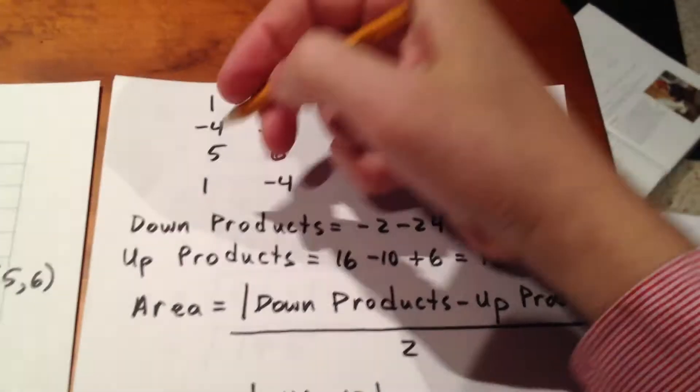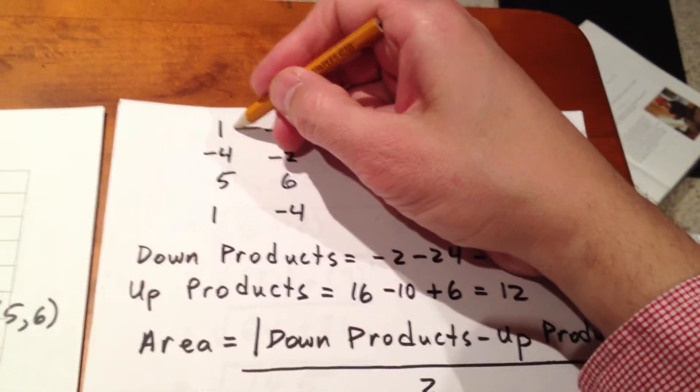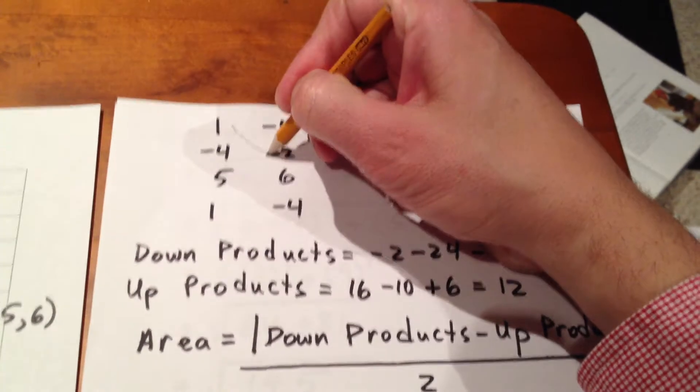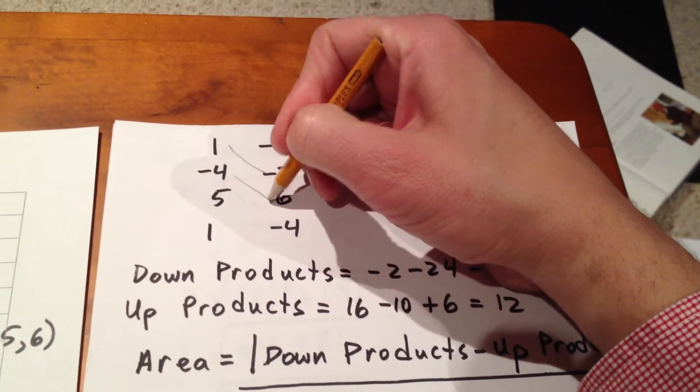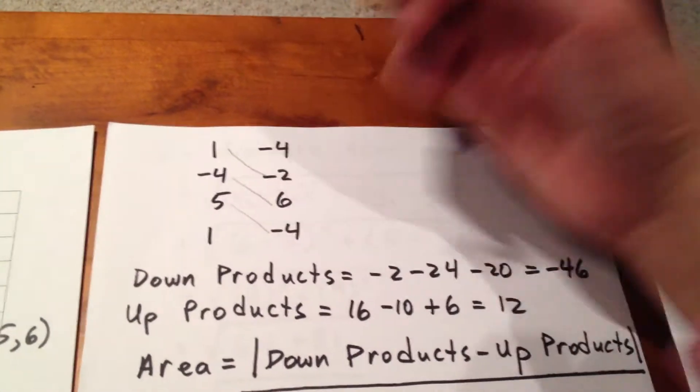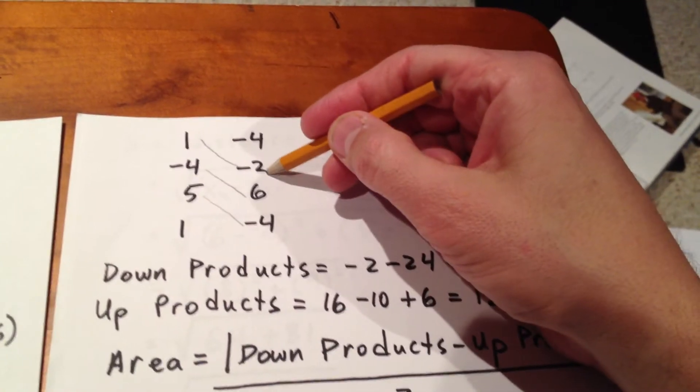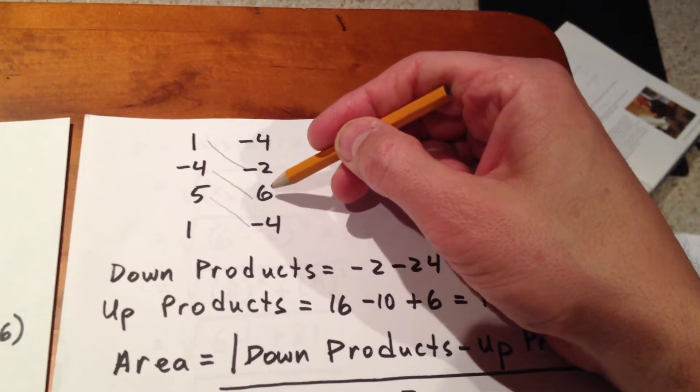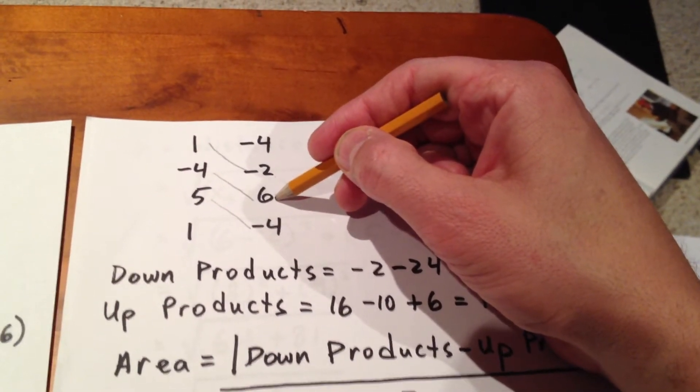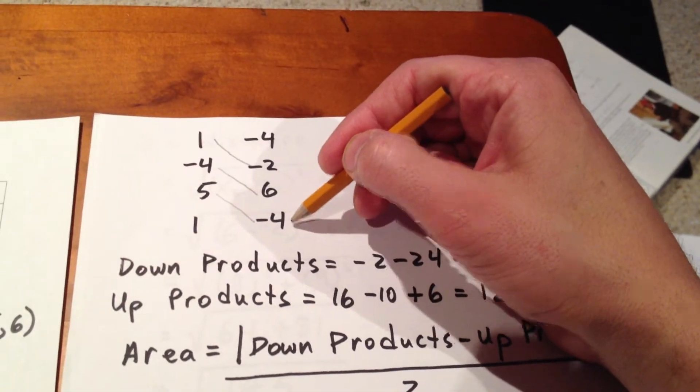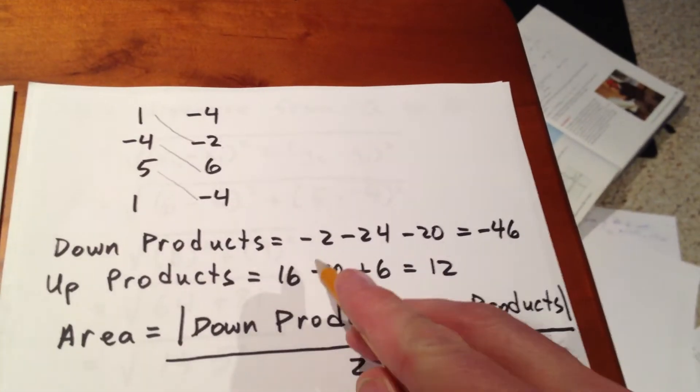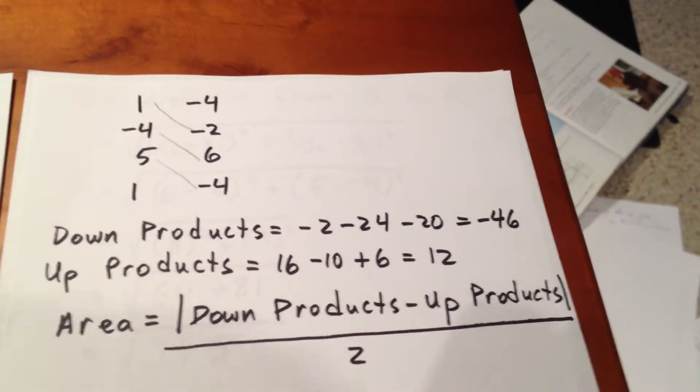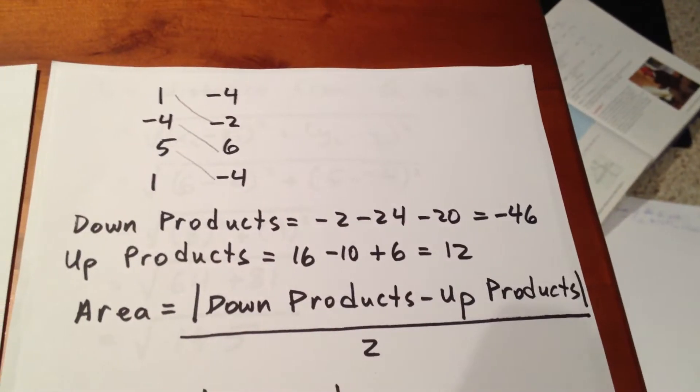We have to imagine our down products, so we go from 1 to negative 2, from negative 4 to 6, and from 5 to negative 4. 1 times negative 2 is negative 2, negative 4 times 6 is negative 24, and 5 times negative 4 is negative 20. Adding those up, we get the value, negative 46.